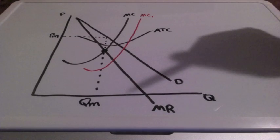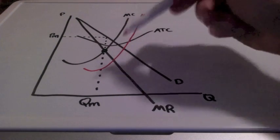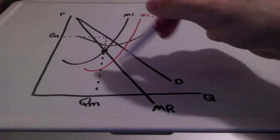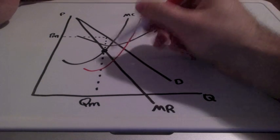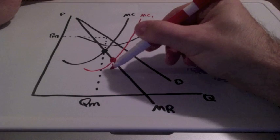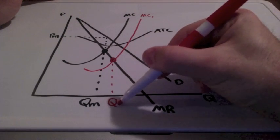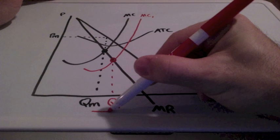So let's find our new profit maximizing quantity and price. Well, we find where marginal revenue equals marginal cost. This is our new intersection. Bring this down. This represents our new quantity. As you can see, quantity is increasing.